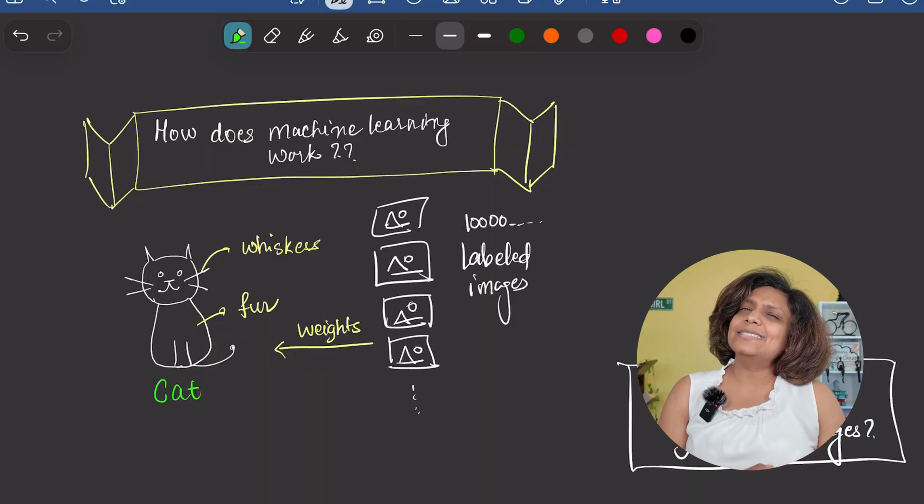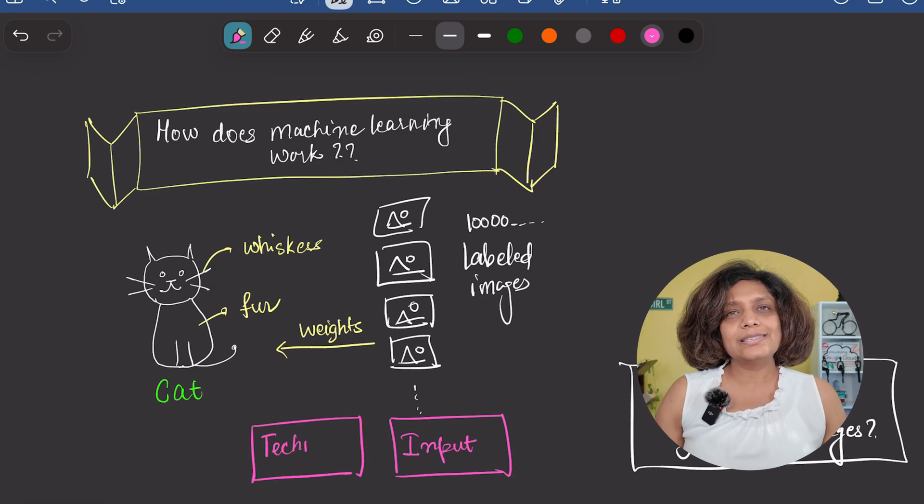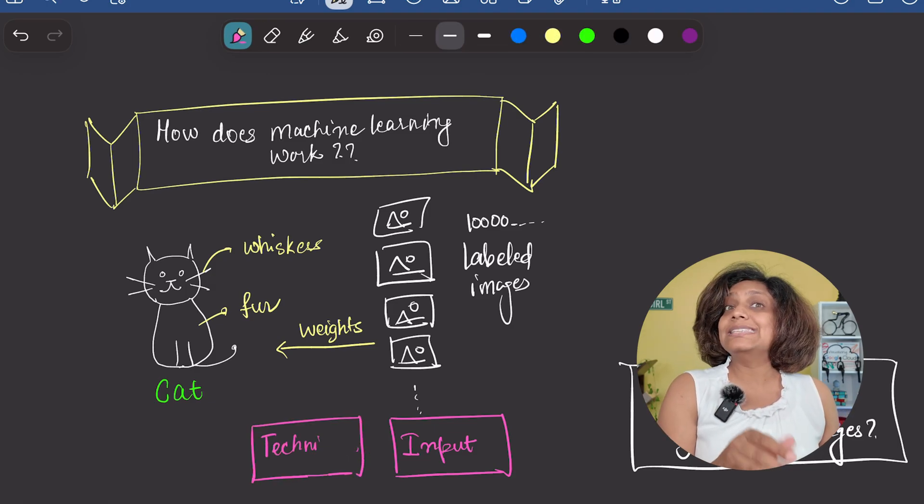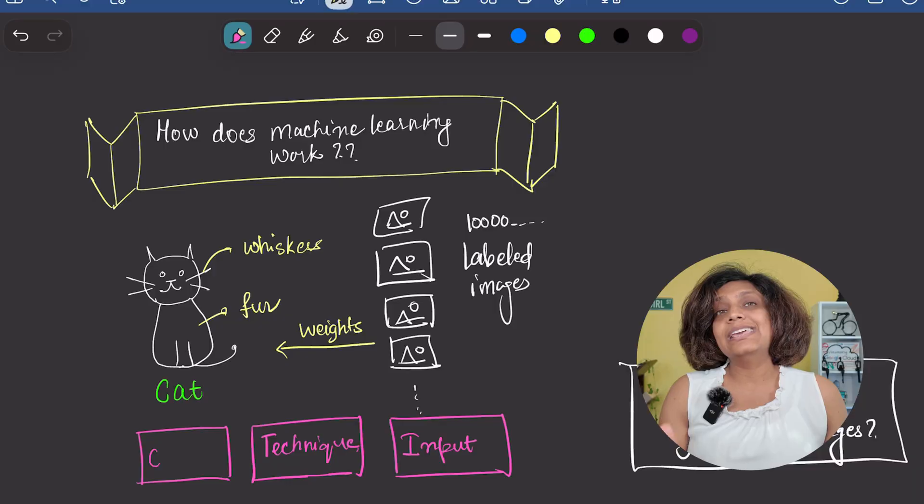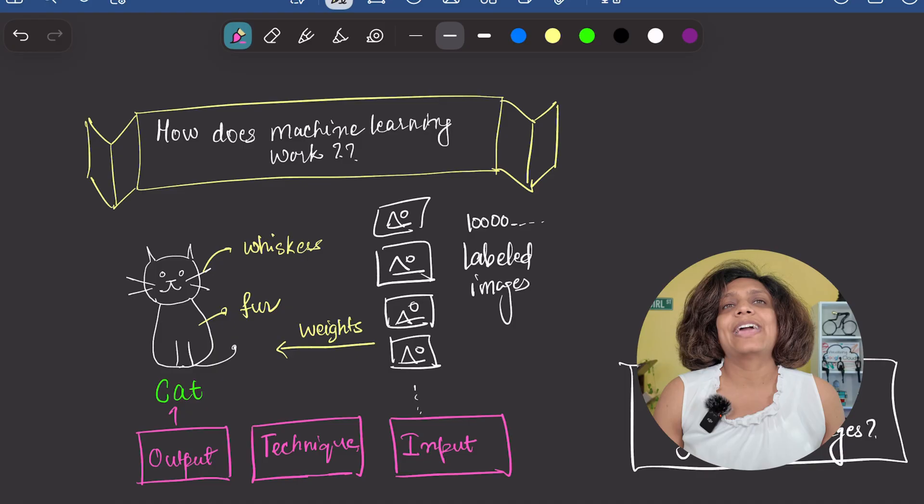When we analyze any machine learning system, we look at a few key things. For our cat classifier, the input is an image, the technique is training a neural network, and the output is a single word: cat.